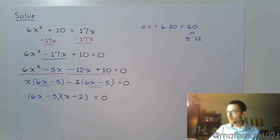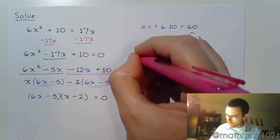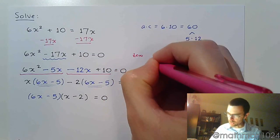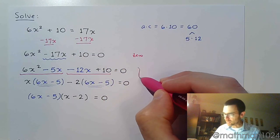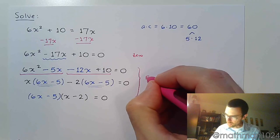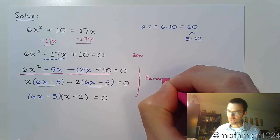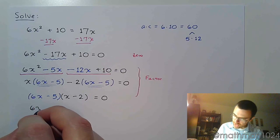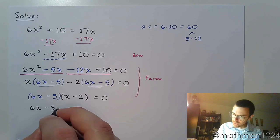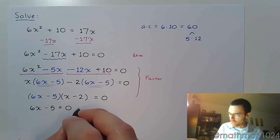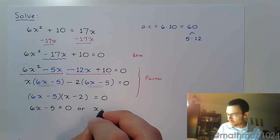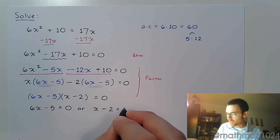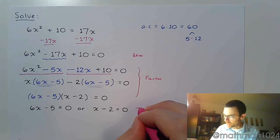So the first part here we got the equation equal to 0, all of this was a process of factoring, and now we actually apply the theorem where we take each factor and we set it equal to 0. So 6x - 5 = 0 or x - 2 = 0, and this is where we are using the actual theorem.